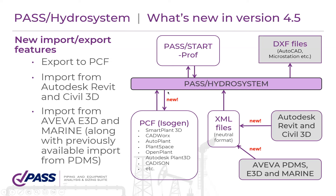If you use 3D software, install the latest version of HydroSystem to easily export your piping system to any software you work with. Also in the latest version, we added import from Autodesk Revit and Civil 3D via special plugins installed into those applications, which export special XML files for HydroSystem. Additionally, we added import from Aveva: previously we had import from Aveva PDMS, and now we also support import from Aveva E3D and Marine.